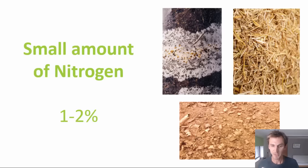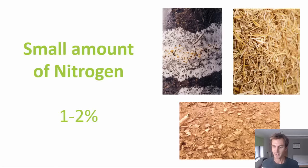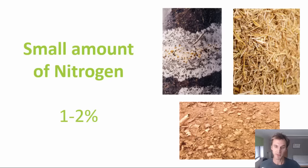Some materials naturally have higher levels of nitrogen — for example, anything that is a seed or part of a seed tends to be fairly high in protein and therefore nitrogen. But most substrates, when they come as their base — for example sawdust or straw — are going to have slightly lower amounts of nitrogen than this. So often you'll find there are additional materials added to a substrate to increase the levels of nitrogen.